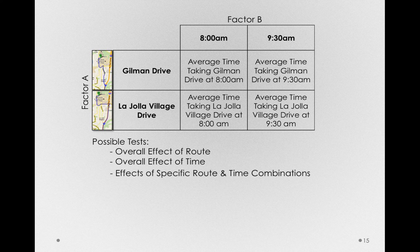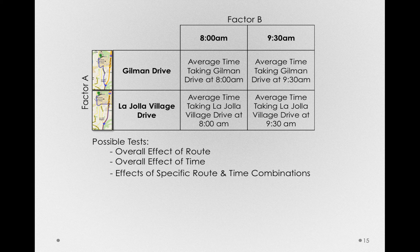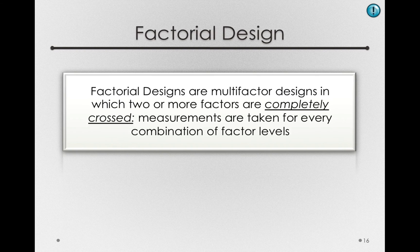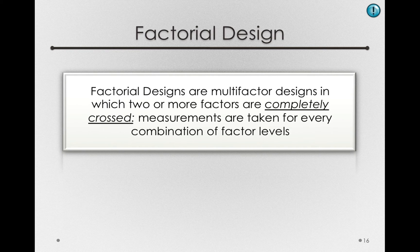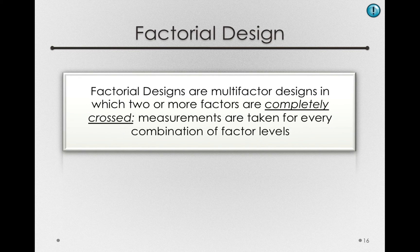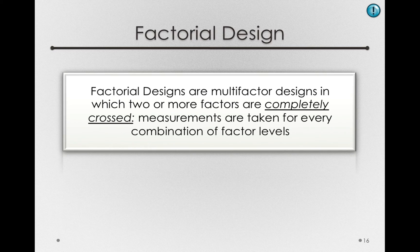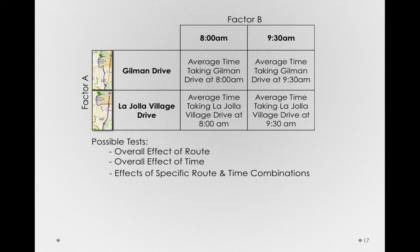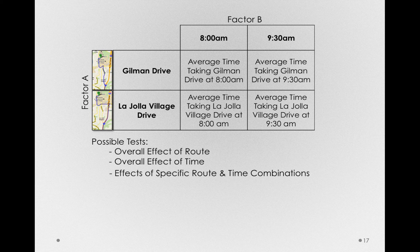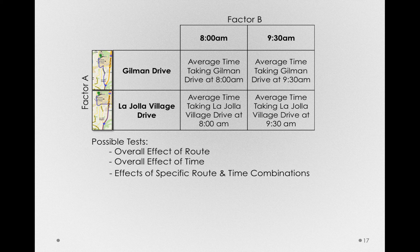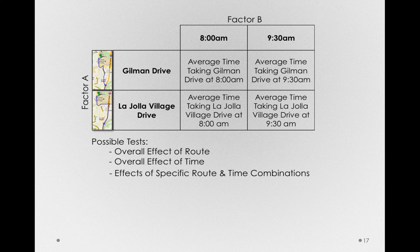Now, we'll spend a little bit of time in this module decomposing that third effect. It turns out to be a very important one for multi-factor studies, but let's first give this design a name. This is known as a full factorial design. And a full factorial design is a multi-factor design in which two or more factors are completely crossed. And by that I mean, measurements are taken for every combination of factor levels. And if we look at our grid, see that I do have measurements, if I actually did this study, and I have, I have measurements for each combination. I will actually measure at 8am both Gilman Drive and La Jolla Village Drive, and at 9:30am, I'll measure the time it takes at both Gilman Drive and La Jolla Village Drive.